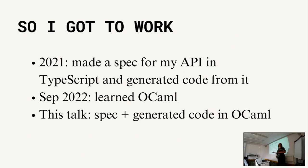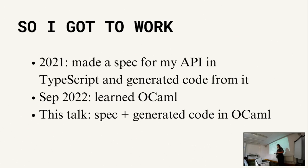This is particularly frustrating when you have statically typed languages on both the frontend and the backend. Types give you a lot of safety on the backend, and types give you a lot of safety on the frontend, but you have this API gap between them where you lose the entire type safety - you have to enforce just by hand, by testing, that the endpoints and the HTTP calls from the frontend match up. So when I get mad, I get to work.